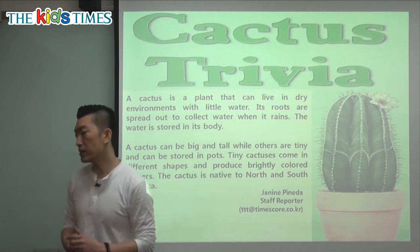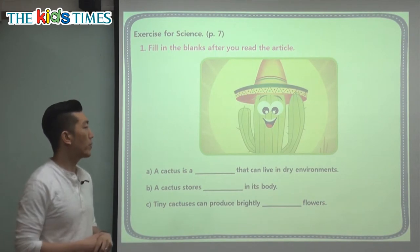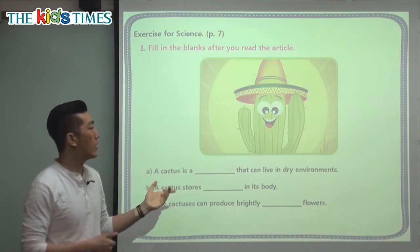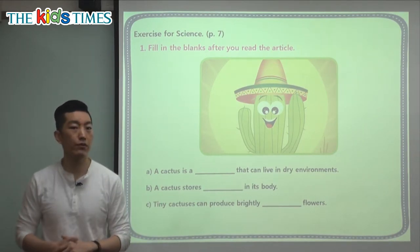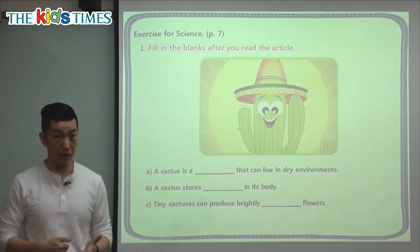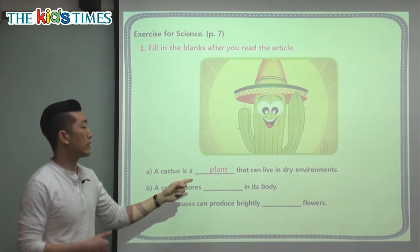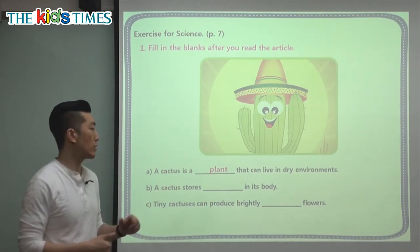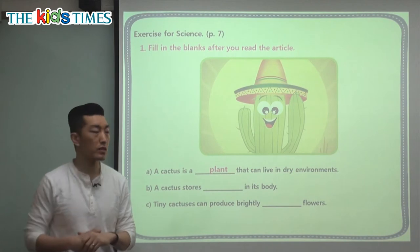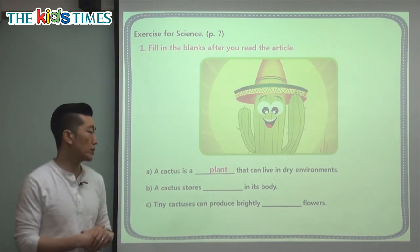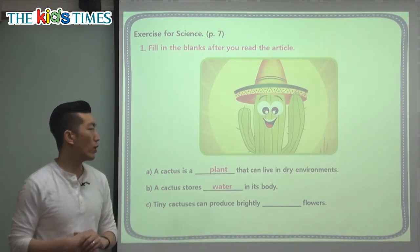They need very little water because they keep it in their bodies. This cartoon cactus has the same characteristics as a real cactus — different shapes. A cactus is a blank that can live in dry environments — what is a cactus? It is a type of plant. A cactus stores what in its body? We know it has sharp thorns on the outside, but it stores water on the inside.